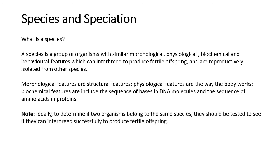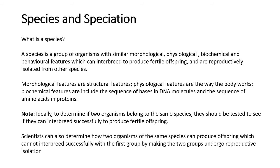Ideally, if two organisms belong to the same species, you can test them by breeding them together to see if they produce fertile offspring. It's also interesting that scientists are actually able to reproductively isolate organisms from each other to ensure they don't breed together so they are unable to make fertile offspring — and I allude to how scientists are able to do that later in this video.